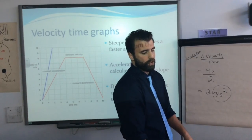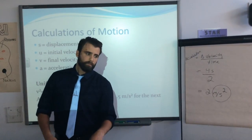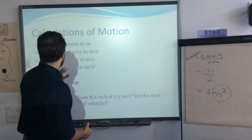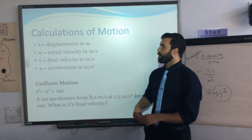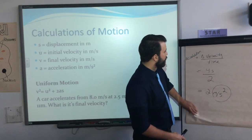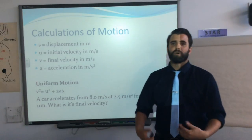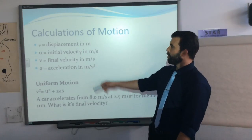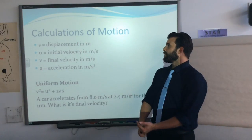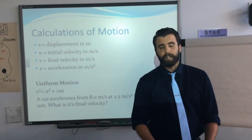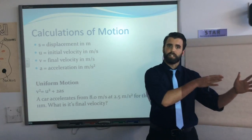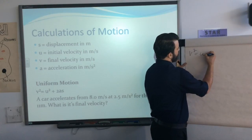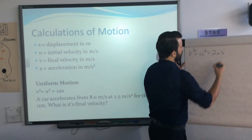Now calculations of motion. We're going to talk about uniform motion and possibly vertical motion. The variable s actually means displacement — don't get angry about it, just accept it. It's in meters. U stands for initial velocity in meters per second, V is final velocity, and A is acceleration. You might calculate acceleration first and then feed it into this equation.